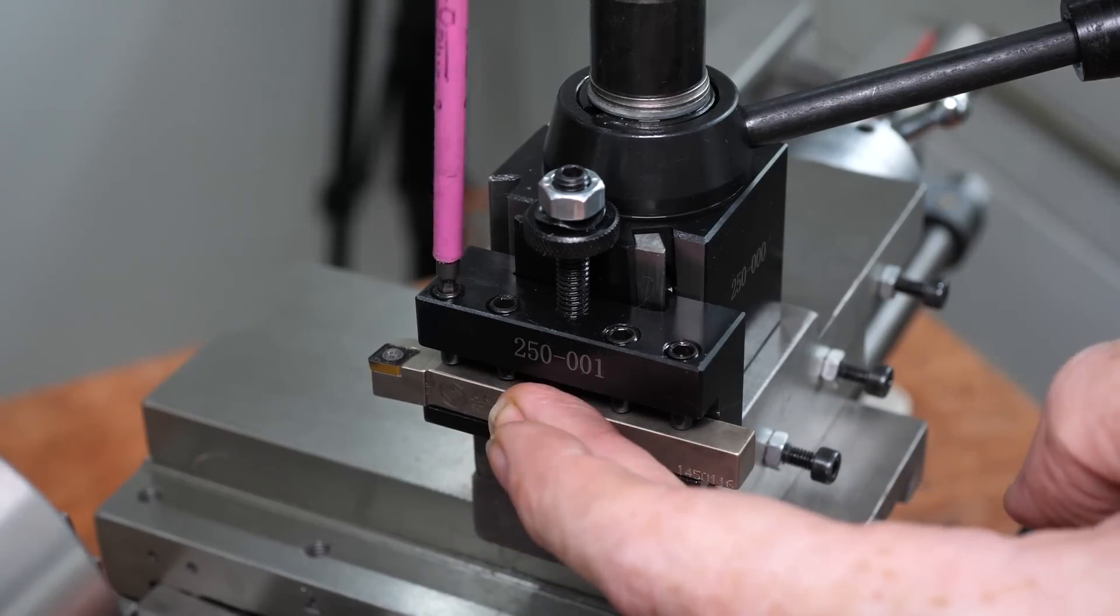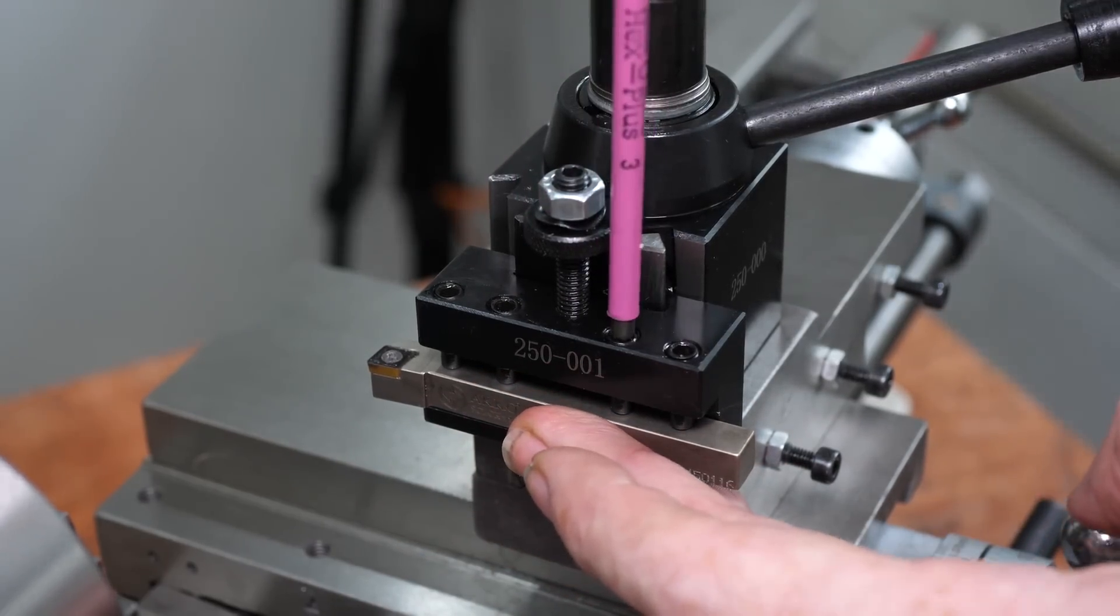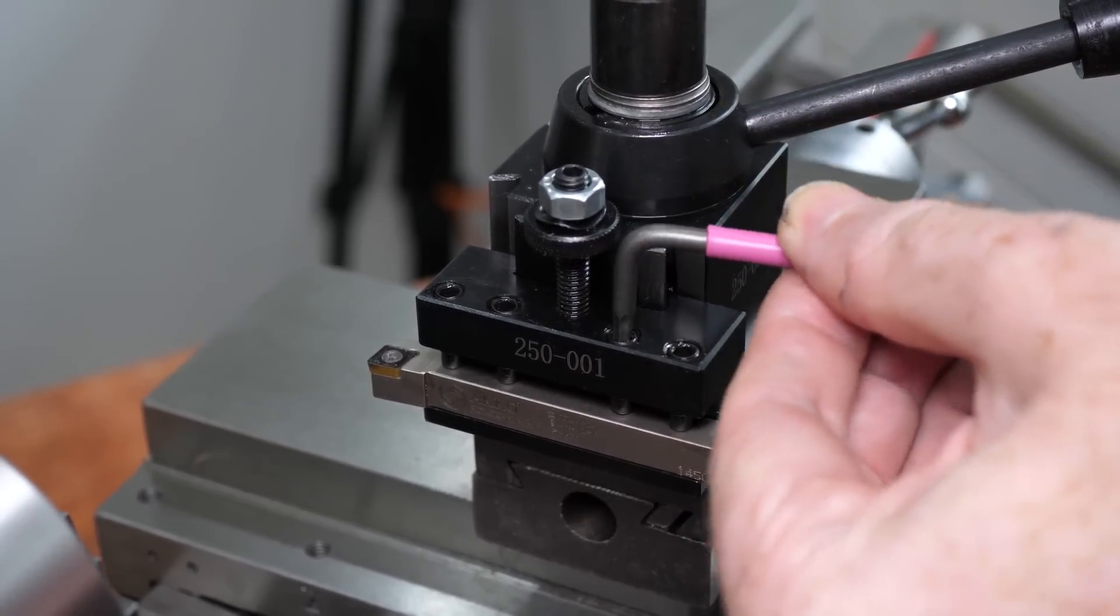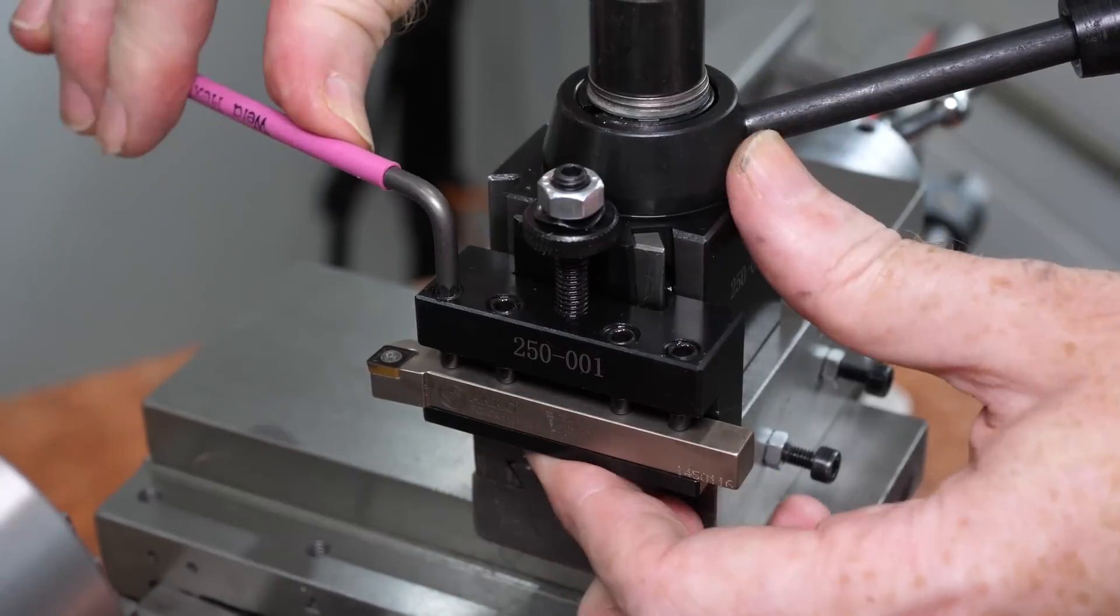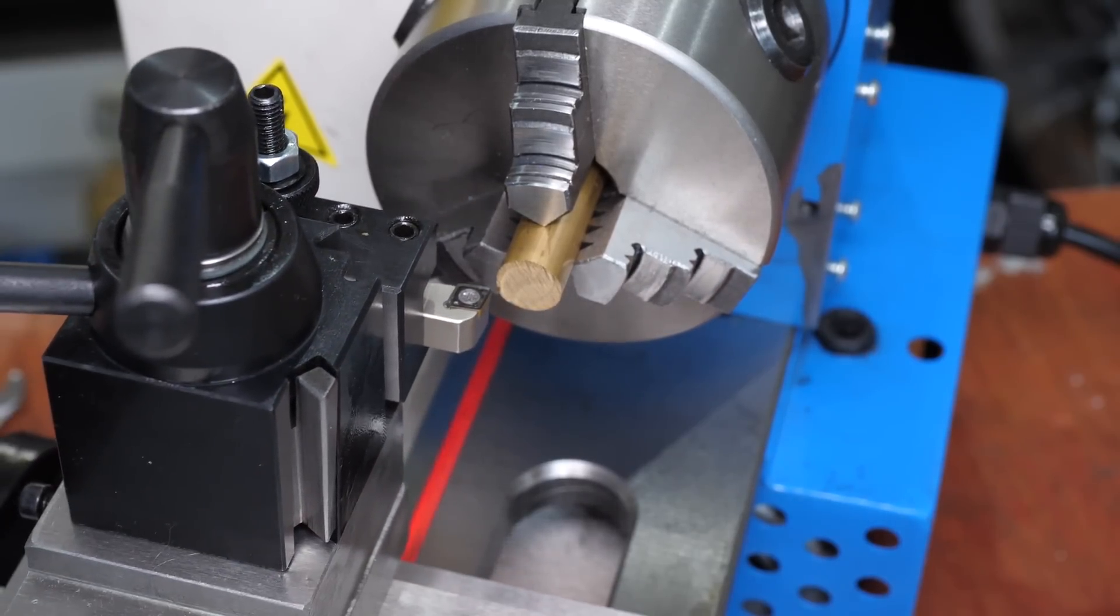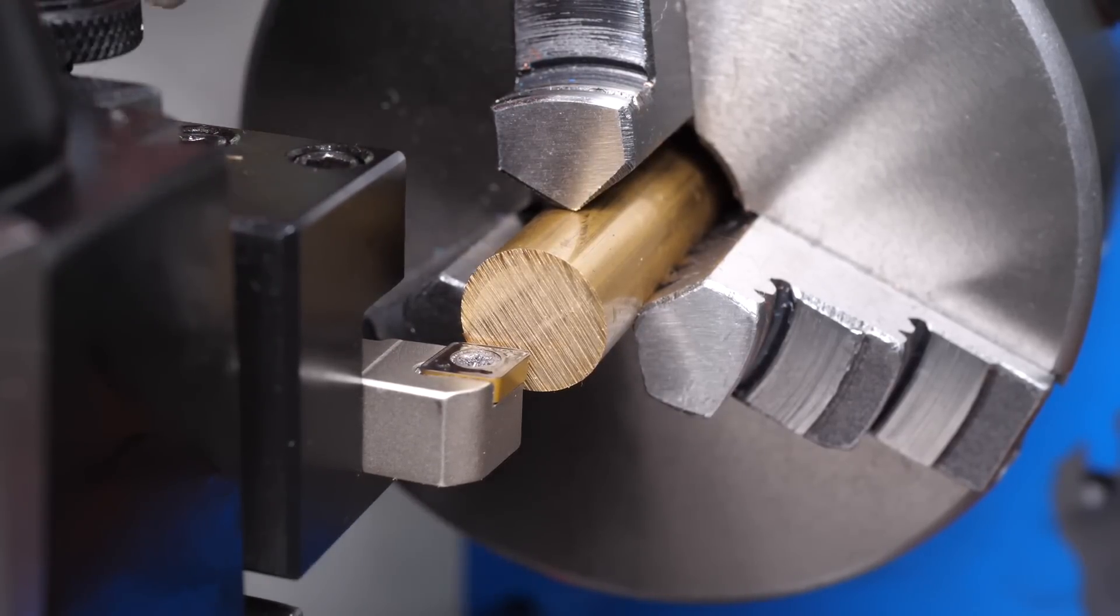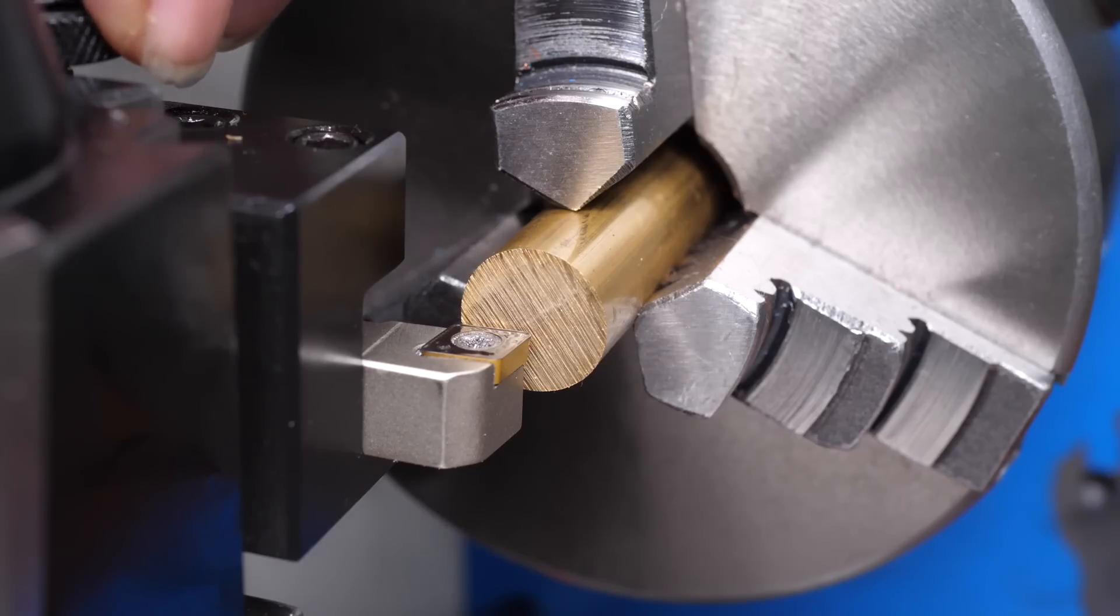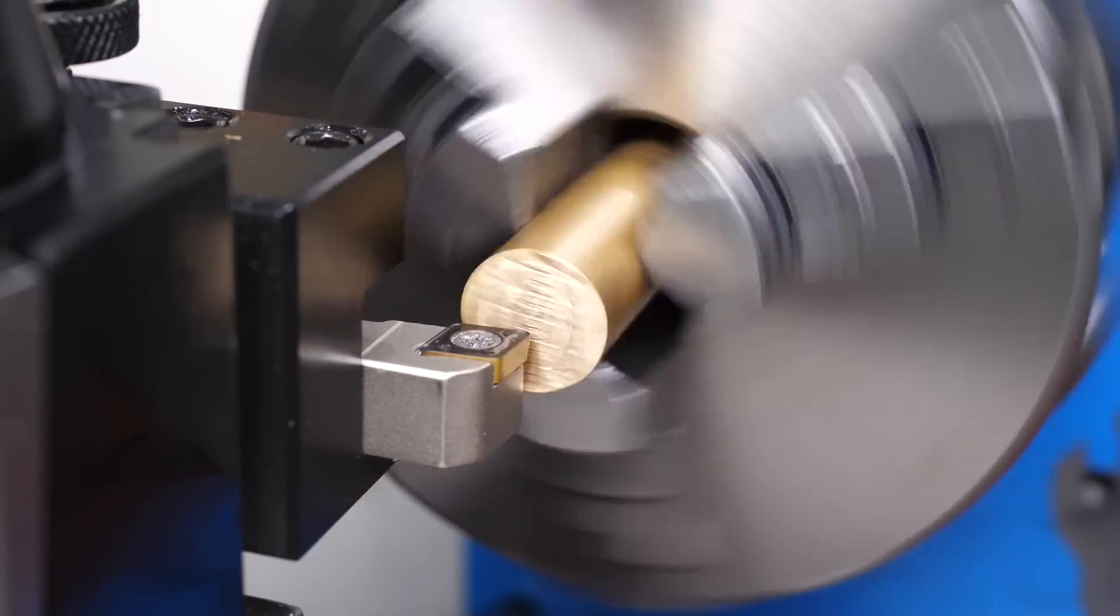One of the most important features of a quick change tool post is being able to quickly and repeatably set the height of the tool. So let's see how easy it is to get the tool height right. I start out by setting it roughly by eye. I aim to get the height slightly below the center rather than above, because it's easier to check and correct from below. I then do a few facing passes to see how close the tool is to center height.